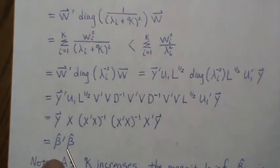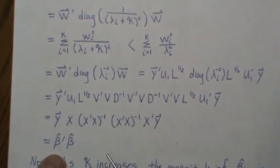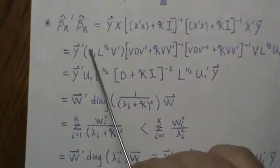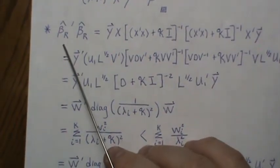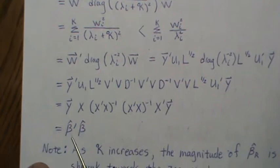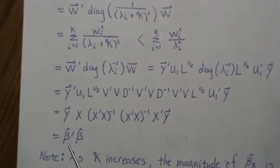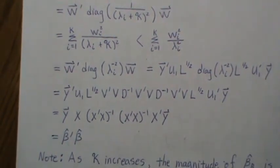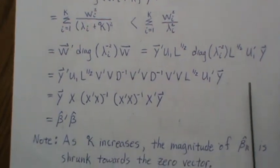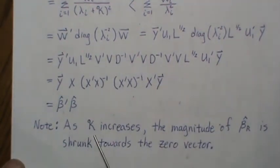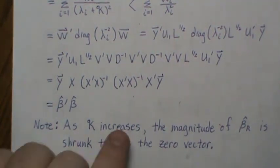This is the singular value decomposition of X, and we have Y, but that is beta prime beta. So that's the length of the beta parameter. The length of the ridge estimator is always smaller than the length of the beta. We're shrinking it down to zero.